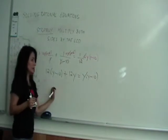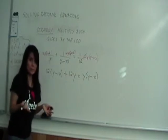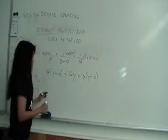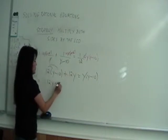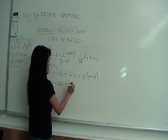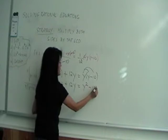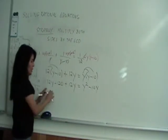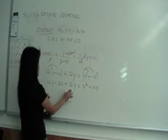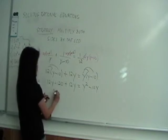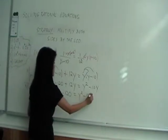Now once you see this, when you have parentheses, you want to get rid of them first by distributing. So you get 12y minus 120 plus 12y is equal to y squared minus 10y. Simplifying each side, 12y plus 12y gives 24y minus 120 equals y squared minus 10y.